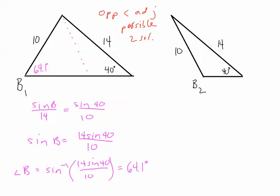That would make this angle over here 64.1 degrees. And that second solution for angle B would then be angle B2 would be 180 minus 64.1 degrees, which is 115.9 degrees.